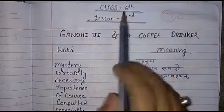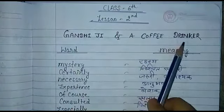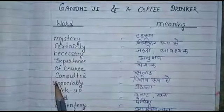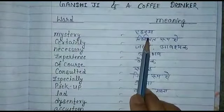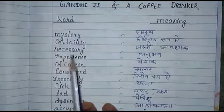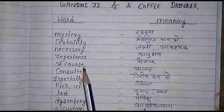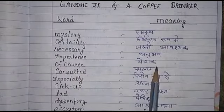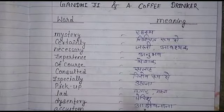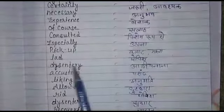Class 6, Lesson 2 — Gandhiji and a Coffee Drinker. Word meanings: mystery — rahasya; suddenly — achanak ya rup se; necessary — zaroori ya awashya; experience — anubhav; of course — bilkul; especially — vishesh rup se; pick up — uthana.